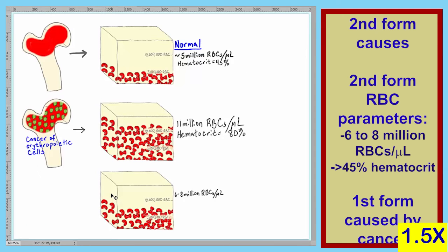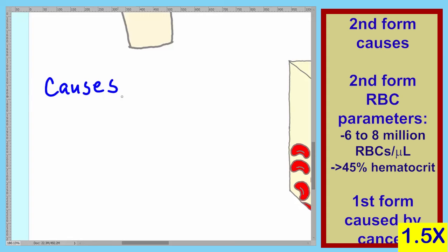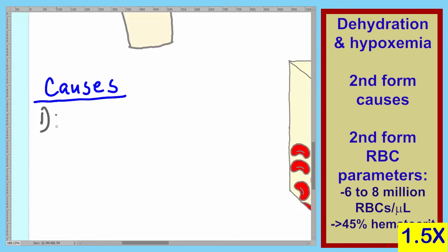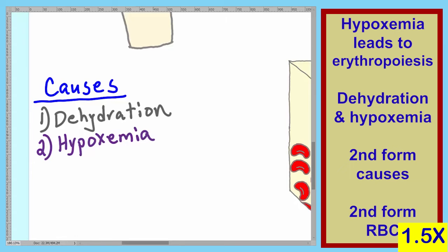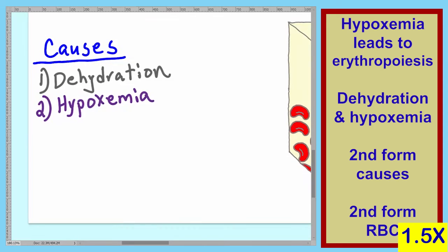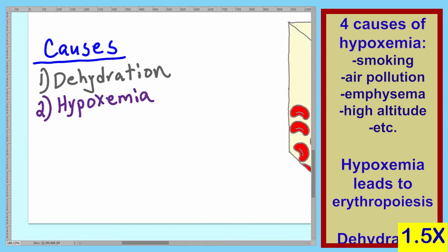Let's identify some causes of this form of polycythemia. There are two primary causes of this type: dehydration and hypoxemia. Hypoxemia, for whatever reason, causes erythropoiesis. There are several reasons why we could have hypoxemia, and we'll list four of them: smoking, air pollution, emphysema, or high altitude.